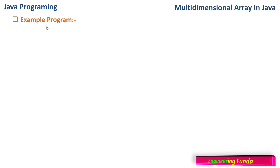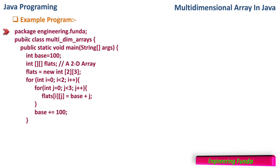Let us look at the example program for multi-dimensional array where we will initialize and use them. We have a package 'engineering funda', public class 'MultiDimensionalArray'. We have an integer 'base' of 100, used for assigning values to each cell. The 2D array named 'flats' is initialized with size two by three. To access a one-dimensional array we require one loop; for a two-dimensional array we require two loops; for three-dimensional, three loops, and so on.